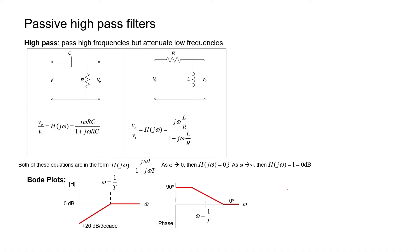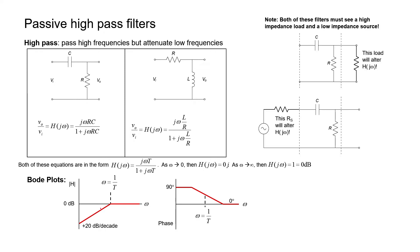Let's take a look at the Bode plots for high-pass filters. If you can identify a filter as a high-pass filter, it's possible to make the plots without a computer using straight line approximations. For every pole in a filter we get a change of 20 decibels per decade. For high-pass filters, there's a 20 decibel per decade rise until we get to the corner frequency, and then the pole causes that rise to clamp down to a flat line at 0 dB. The corner frequency is given in radians per second by 1 divided by tau. The same restrictions apply as with low-pass filters: a load with too small a resistance or a source with too high an impedance can alter the filter's corner frequency.